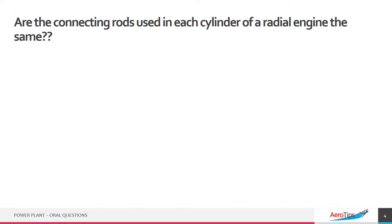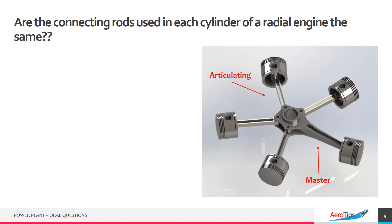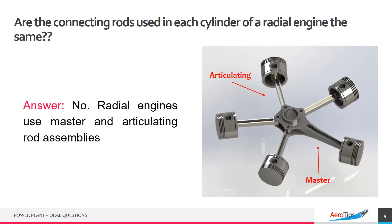Are the connecting rods used in each cylinder of a radial engine the same? Explain. No, radial engines use master and articulating rod assemblies.